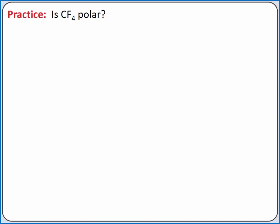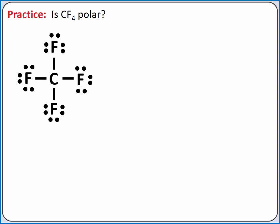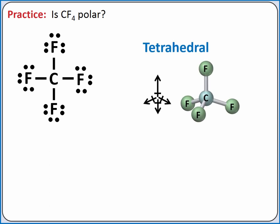Let's practice determining whether molecules are polar or nonpolar. We'll start with carbon tetrafluoride. First, we want to draw the Lewis structure. Then we can assess whether or not our four polar carbon-fluorine single bonds cancel each other out. This molecule has a tetrahedral molecular geometry. Since all bonds are identical polar bonds and there are no lone pairs of electrons on our central atom, the polar bonds will cancel each other out, and carbon tetrafluoride is a nonpolar molecule.